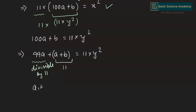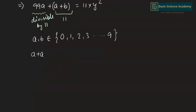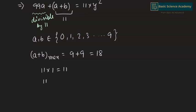Since A and B are digits they belong to 0 through 9. The maximum value of A + B is 9 + 9 = 18. Since 11×1 = 11 and 11×2 = 22, and the maximum is less than 22, the only possible value is 11. Hence A + B = 11.